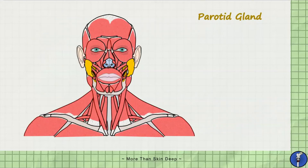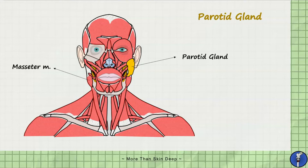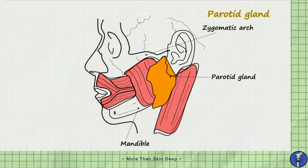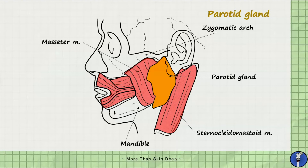The parotid glands lie on either side of the buccal and parotid regions of the face and are situated anterior to the lower half of the external ears. If we remove the right parotid gland and the orbicularis oculi muscle, we can see the masseter muscle lies immediately deep to the parotid gland. The parotid gland typically extends from the zygomatic arch to the inferior border of the mandible. Viewed laterally, it covers part of the anterior aspect of the sternocleidomastoid muscle and extends anteriorly to cover approximately halfway across the masseter muscle.